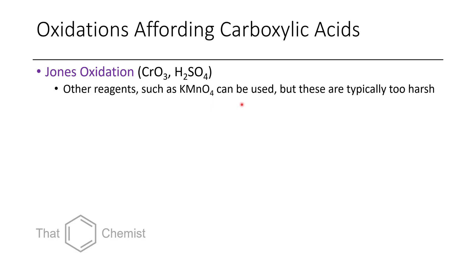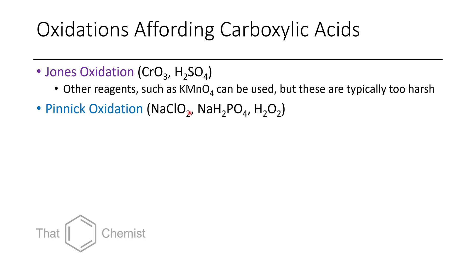However, potassium permanganate and nitric acid tend to also do other chemistry to organic molecules, so we tend to avoid them. For example, with nitric acid we can also do nitrations of rings. So the Jones oxidation is quite common.